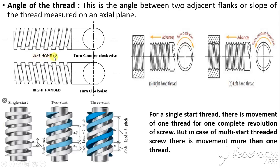There are different types of threads. Based on rotation, we have left-handed and right-handed threads. If you rotate the screw clockwise and it advances linearly forward, it is a right-handed thread. If you rotate it counterclockwise and it advances forward, it is a left-handed thread. For a given axial displacement, if there is one thread movement for one rotation, we call it a single-start thread — one complete 360-degree rotation, only one thread moves forward.